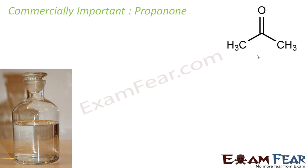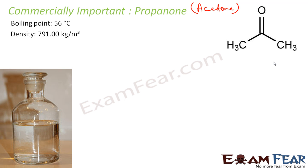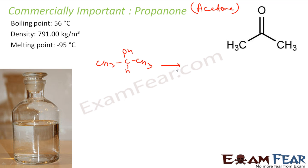The next is propanone — commonly known as acetone. Its structure is CH3COCH3. It is commonly used for nail polish removal and is one of the biggest solvents — one third of the world's solvent production is acetone. It has a boiling point of 56 degrees Celsius, density of 791 kg per meter cube, and melting point of minus 95 degrees Celsius. To prepare it, you take CH3CH(OH)CH3 and use copper catalyst at around 580 Kelvin to get CH3COCH3 and hydrogen gas.